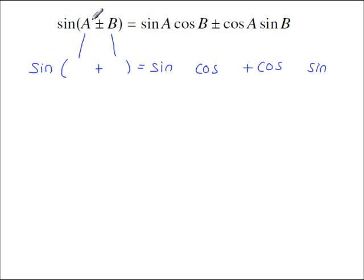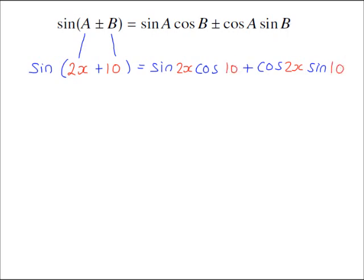Now let's say A is 2x and B is 10. Then wherever there's an A we put 2x, and wherever there's a B we put 10. You can also modify the sign: if the angle is a minus instead of a plus, then you get a minus on the corresponding side of the expanded expression.